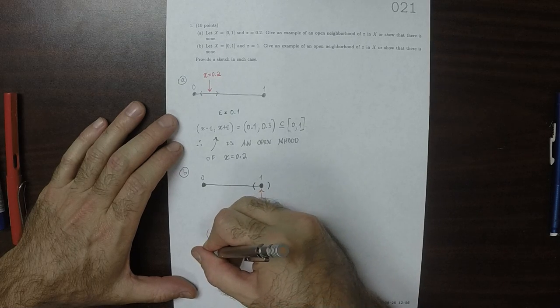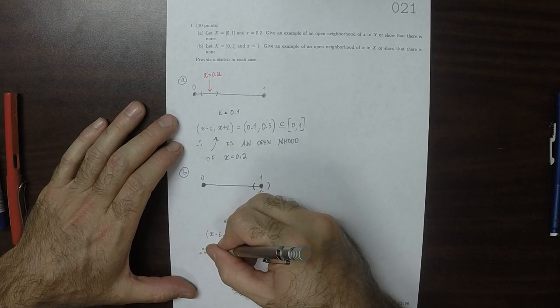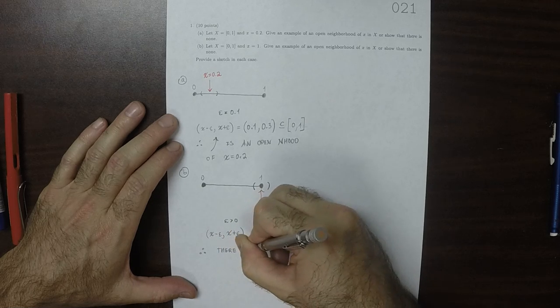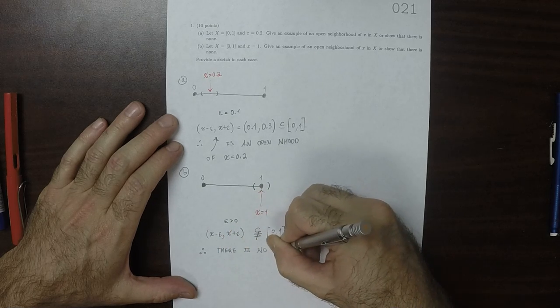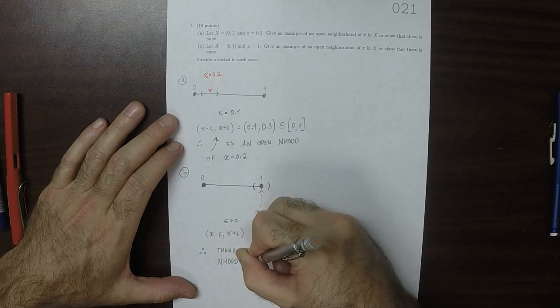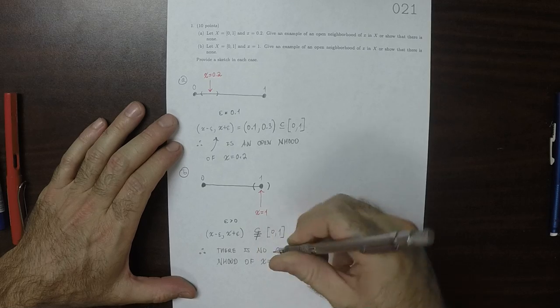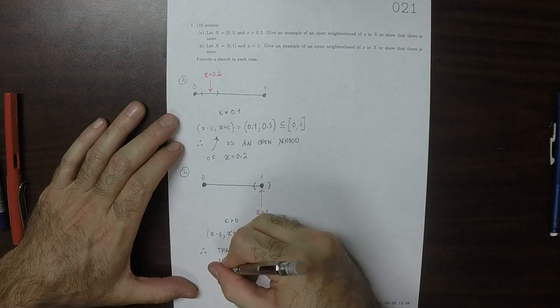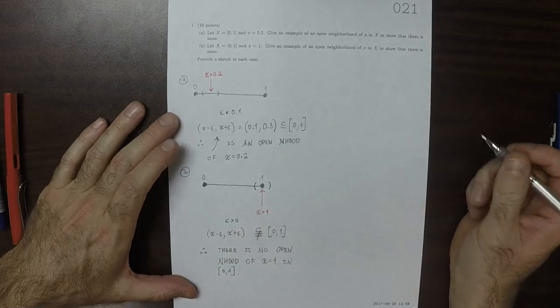Therefore, there is no open neighborhood of x is 1 inside the set 0 to 1.